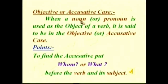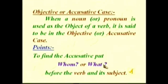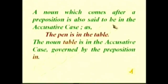The second case is called the objective or accusative case. When a noun or pronoun is used as the object of a verb, it is said to be in the objective or accusative case. To find the accusative, put two questions — 'whom' or 'what' — before the verb and its subject. A noun which comes after a preposition is also said to be in the accusative case, as in 'the pen is in the table' — here the noun 'table' is in the accusative case, governed by the preposition 'in.'